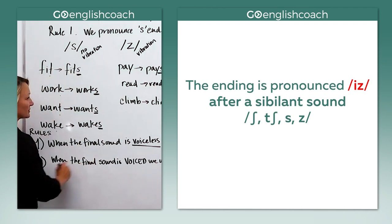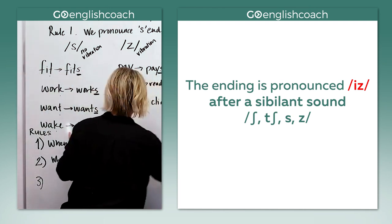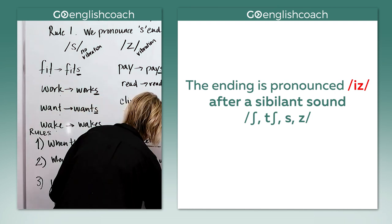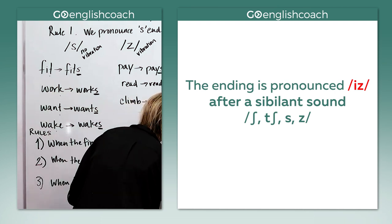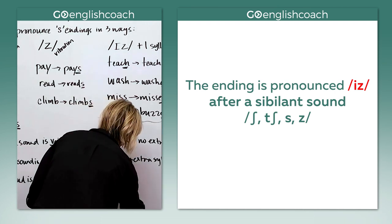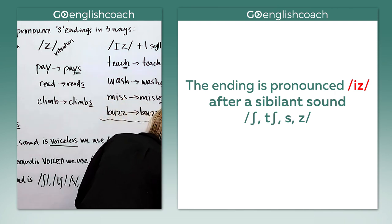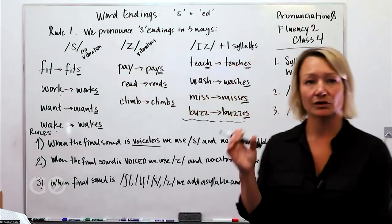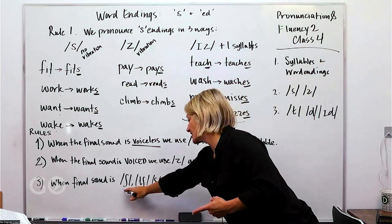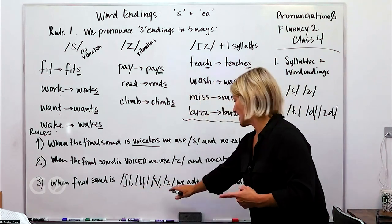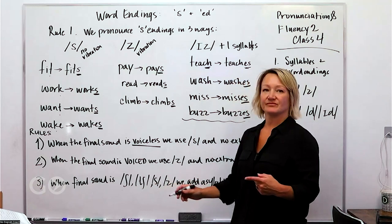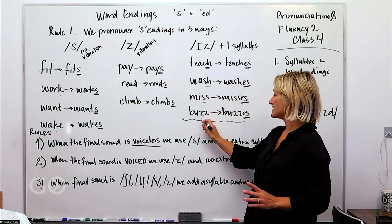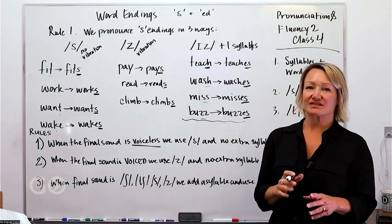And then the last one that refers to or talks about what happens here. When the final sound is, let's see, S H, D H, S or Z, we add a syllable and use the is sound. So we're adding a syllable when we have those final sounds, the S H sound, the C H sound, S and Z. Those sounds, when those are the final sounds, C H, S H, S or Z, we use the is sound.